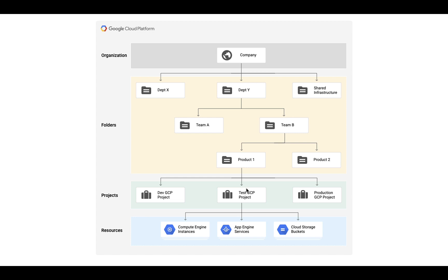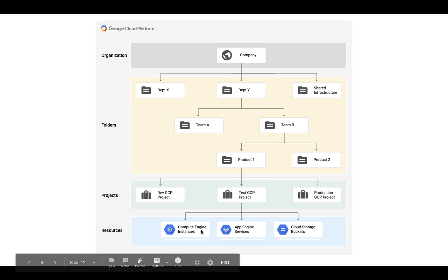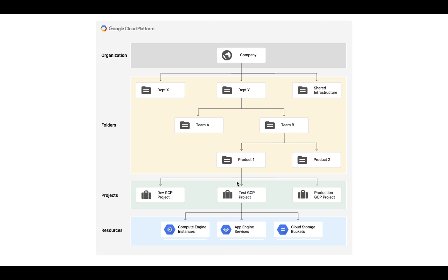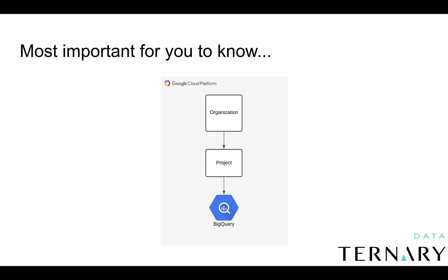Within a project, you can have resources, such as Compute Engine instances, App Engine services, Cloud Storage buckets, or BigQuery. What's important for you to know is that you will typically deal with a resource hierarchy from an organization to a project to BigQuery.